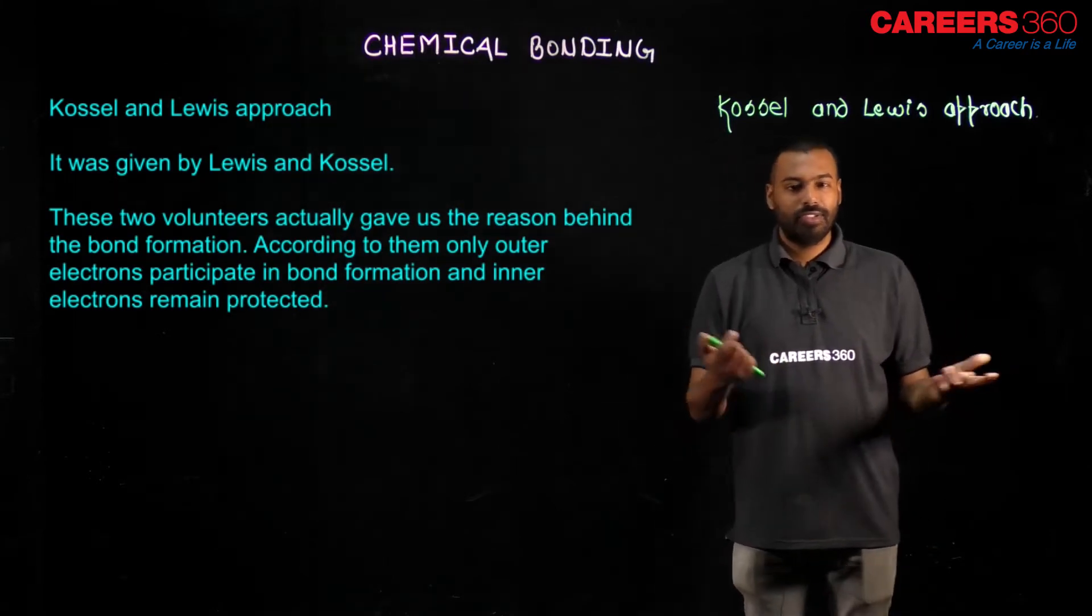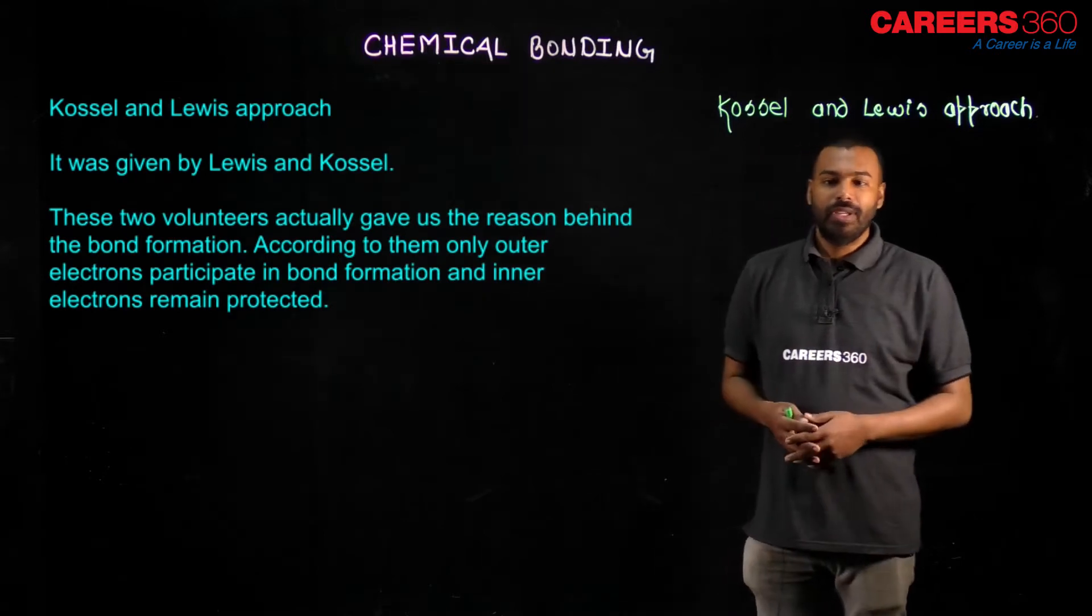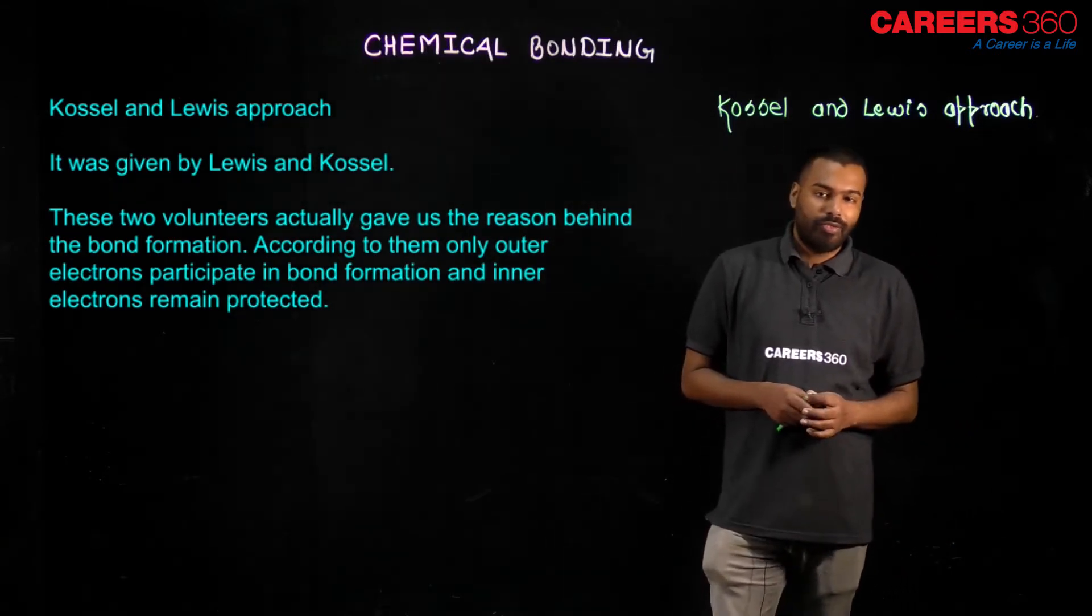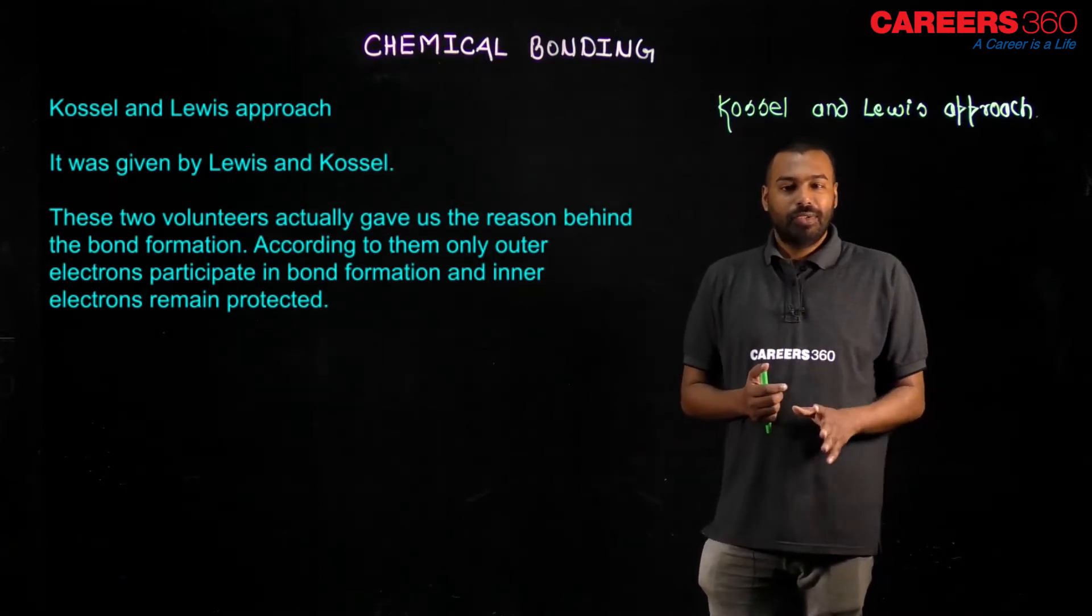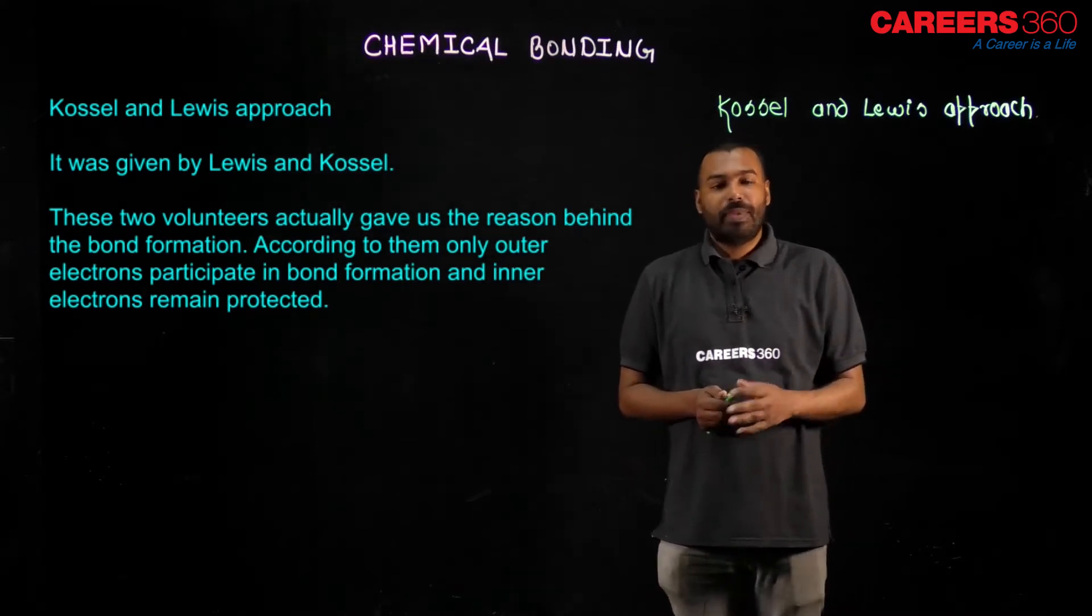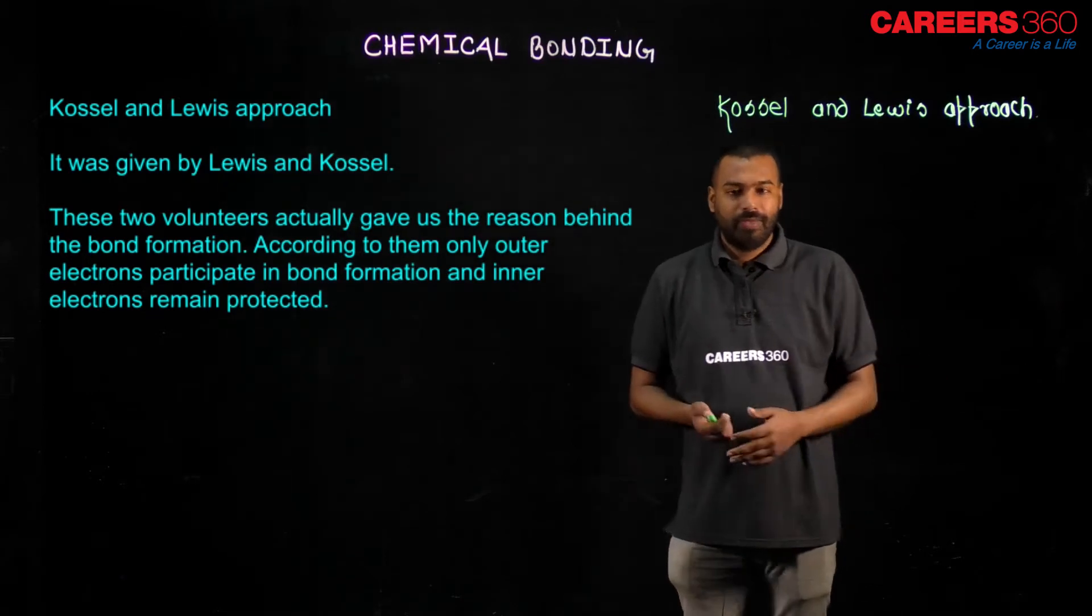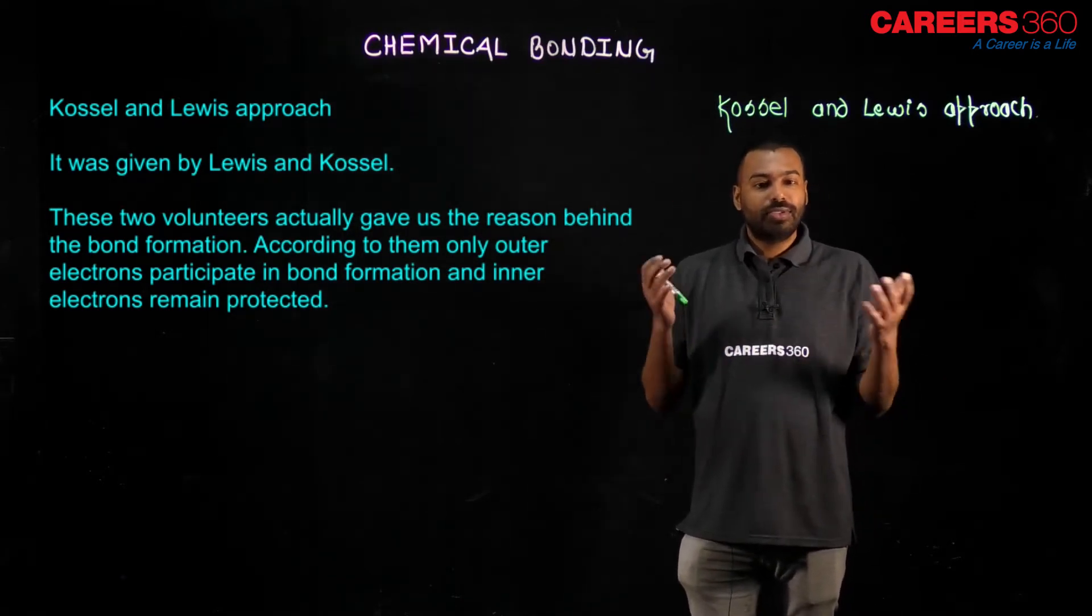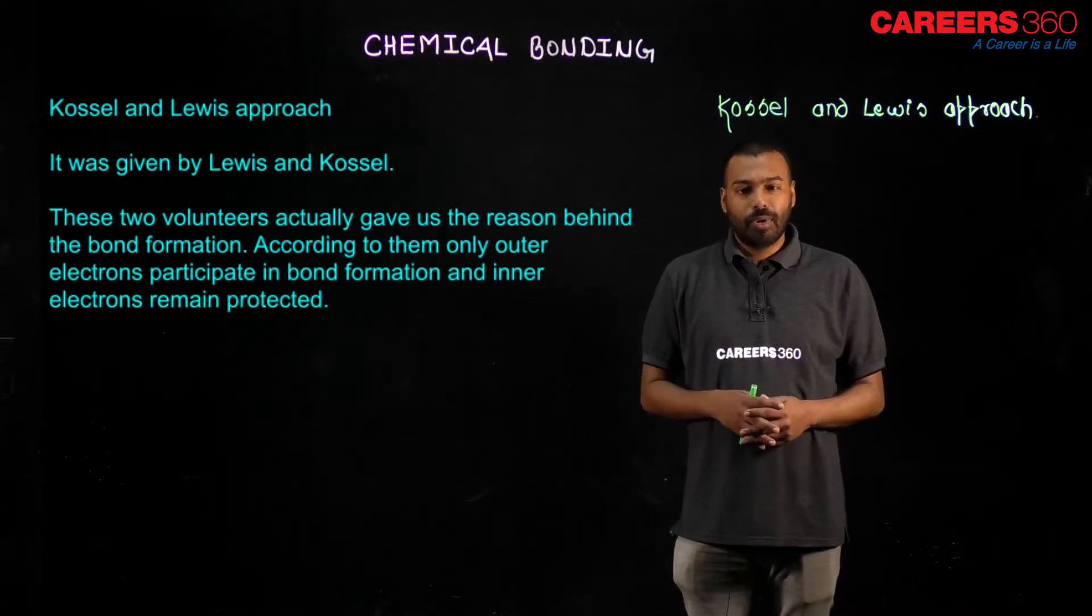It was given by Lewis and Kossel. Both are two different scientists, do not think that they are the same. These two volunteers actually gave us the reason behind bond formation. What reason did they give? Octet completion only, nothing else. According to them, only outer electrons participate in bond formation and inner electrons remain protected. Let us see how this Kossel and Lewis approach helps to understand bonding.